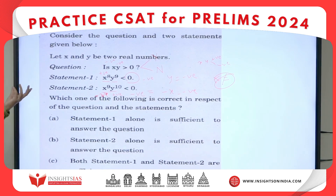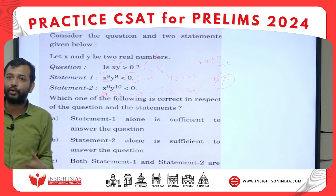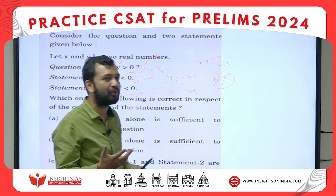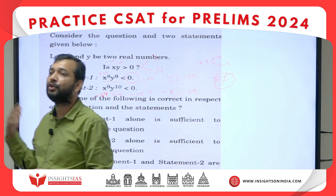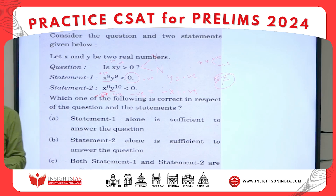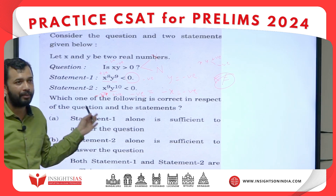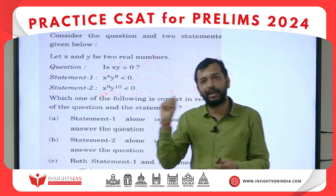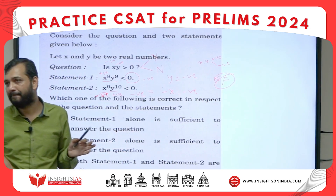When combining both statements, x is negative and y is negative. Negative times negative is positive, so xy > 0 — yes! Using both statements together, we can answer the question. Neither statement alone is sufficient, but together they are. Though the question looks difficult with x to the power of 8 and y to the power of 9, at the end of the day it is basic operations — understanding whether you know these fundamentals is what is being tested.